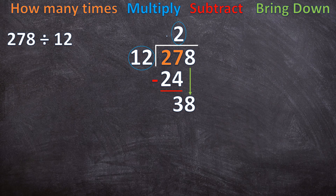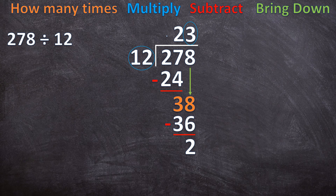Now we start all over again. How many times can 12 go into 38? 12 can go three times into 38. 3 times 12 is 36. Now we subtract: 38 minus 36 is 2. We end with 2, and there's no other digit we can bring down, so this is where our long division ends. So 278 divided by 12 is 23 with a remainder of 2.